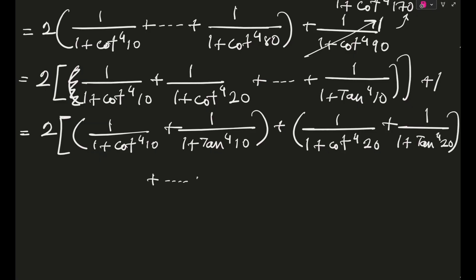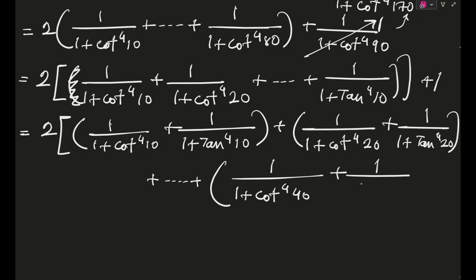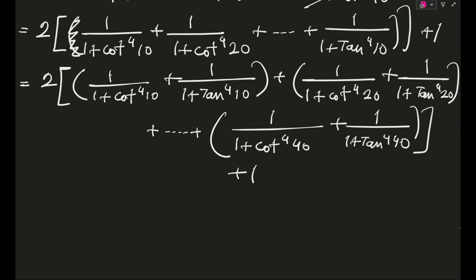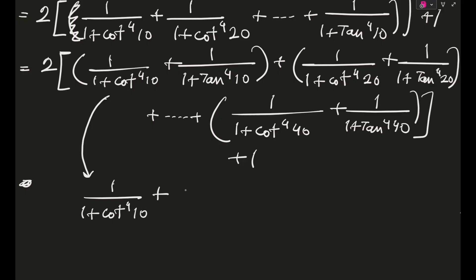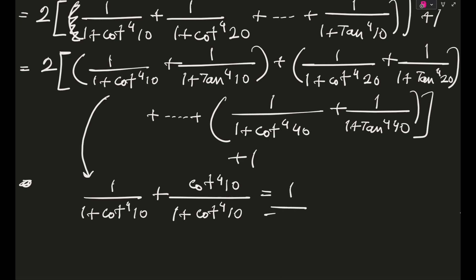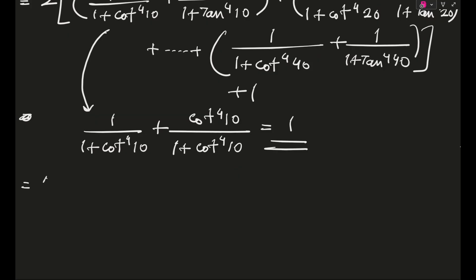This will go up till 1/(1 + cot⁴40°) paired with 1/(1 + tan⁴40°), all within the factor of 2, and outside we obviously have a plus 1. If we manipulate one bracket, writing 1/(1 + cot⁴10°) and converting tan⁴ into cot⁴, we get cot⁴10°/(1 + cot⁴10°). When you add these two, it comes out equal to 1.